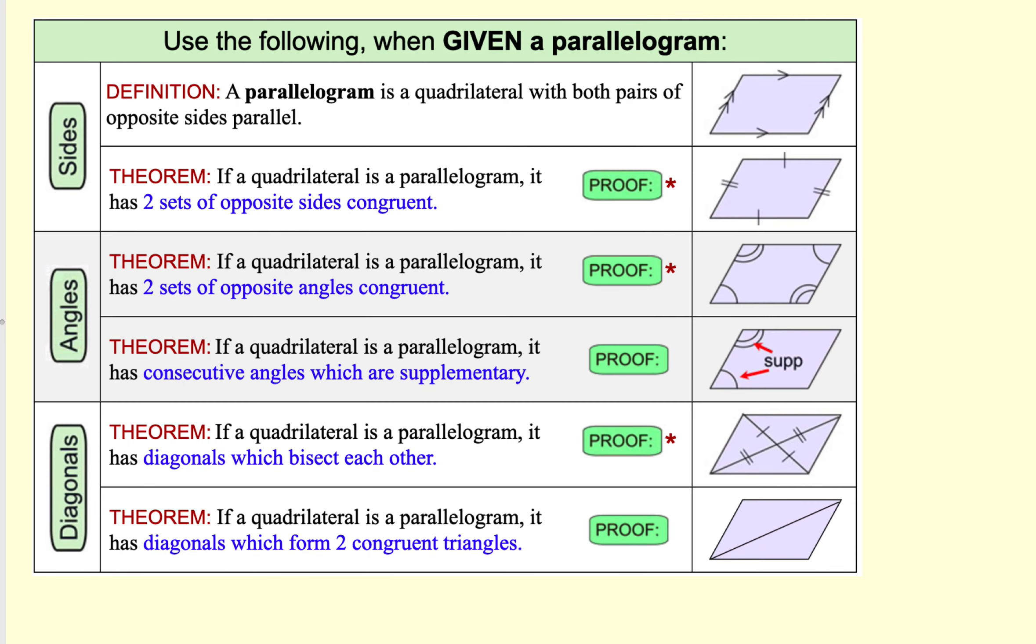Okay. So let's take a look at what we have learned so far. In a parallelogram, opposite sides are parallel. In a parallelogram, opposite sides are congruent. In a parallelogram, you have two sets of opposite angles that are congruent. And in a parallelogram, you have consecutive angles that are supplementary. We just learned that diagonals bisect each other. So they cut each other like this. And one diagonal will always make two congruent triangles.